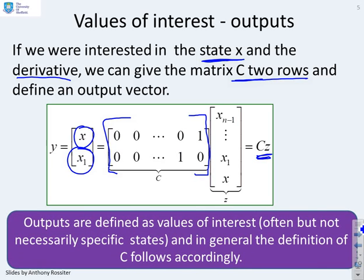Now a key point here is the outputs are defined, keyword is defined, as the values of interest. That's what an output is, something that you're particularly interested in. But often these are specific states, and the examples I've used here are specific states. But they don't have to be. In general, the definition of C is what you want to make it. So for example, you could say my value of interest is y equals 3x_1 plus 2x_2. That's entirely up to you if that's what you want to define the value of interest to be. And you could define a corresponding C to extract that output.